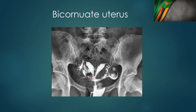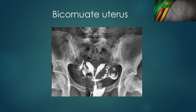Lastly, this slide shows how HSG can be important in identifying uterine abnormalities. This is a bicornuate uterus. Remember that the Müllerian system on the left and right sides normally come together to form a uterus. When that fusion is not complete, we can see one horn on the right side and one horn on the left side of the patient. The tubes appear open apart, and we can see spill on both sides. So an HSG can reveal significant uterine abnormalities.